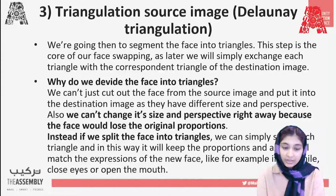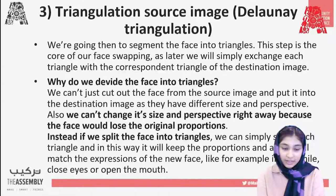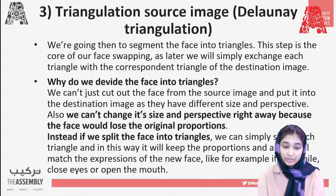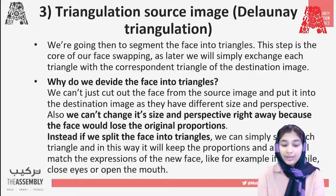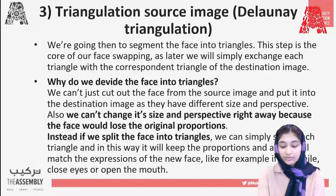Later, we will simply exchange each triangle with the corresponding triangle of the destination image. Why do we divide the face into triangles? It's because we can't just cut out the face from the source image and put it onto the destination image, since they have different size and perspective. We can't change its size and perspective right away because the face would lose the original proportions. Instead, we split the face into small triangles, swap each one, and in this way it keeps proportions and matches expressions like smiling, closing eyes, or opening mouth.